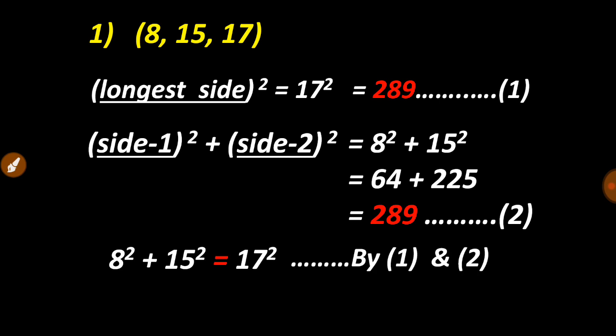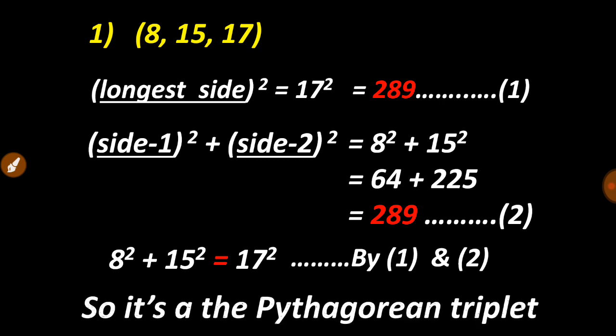Then of course we can say 8² + 15² = 17². The sum of square of two sides and the square of longest side are equal. Then these three sides are nothing but Pythagorean triplet, meaning we can make a right-angled triangle using these three sides.